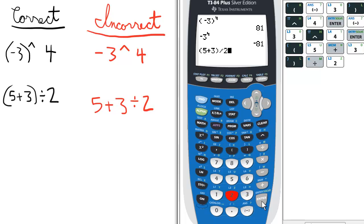Divided by 2 and enter. That's correct, because 5 plus 3, the quantity divided by 2, is 4.